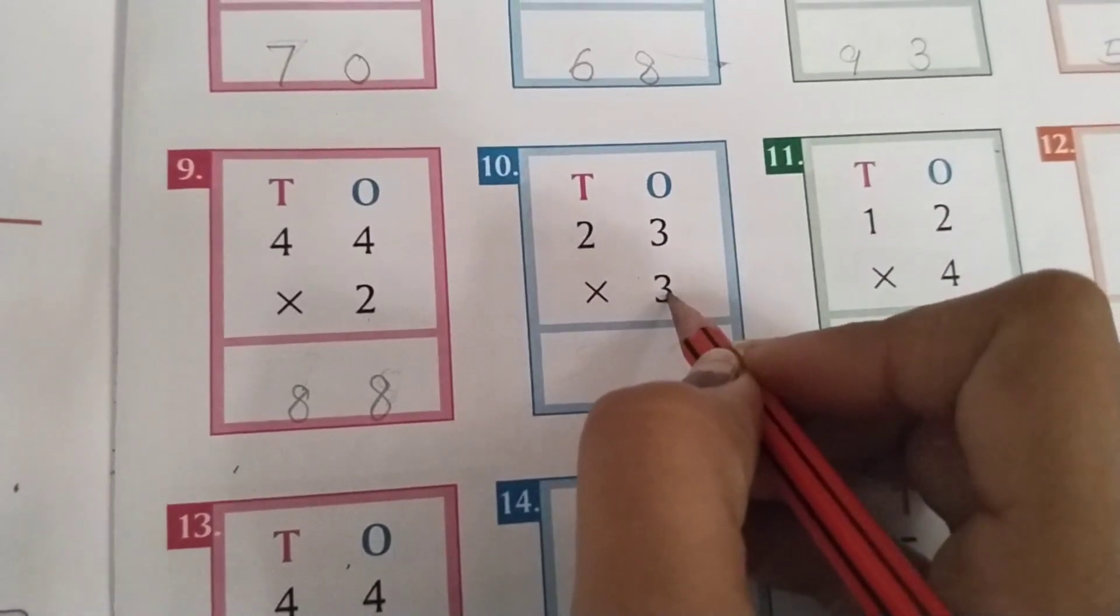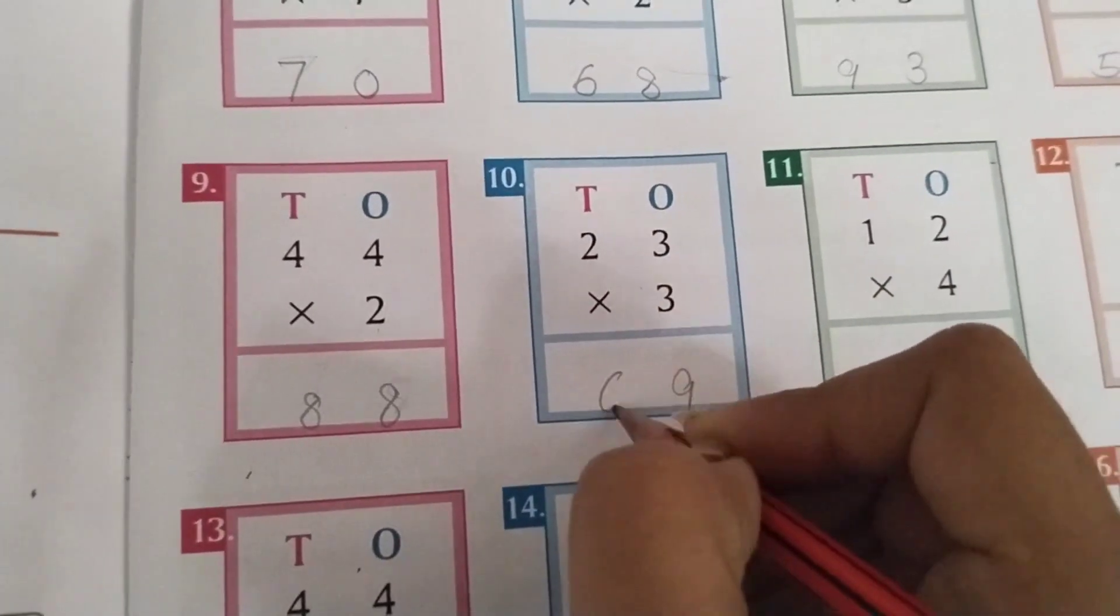23 multiply by 3. 3 3s are 9. 3 2s are 6.